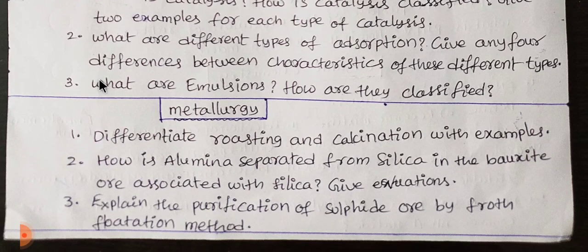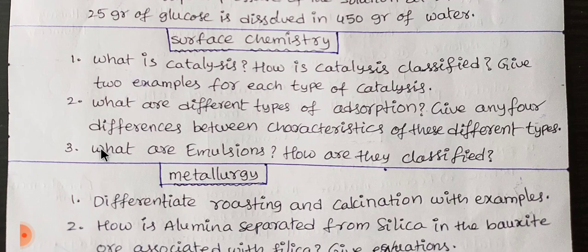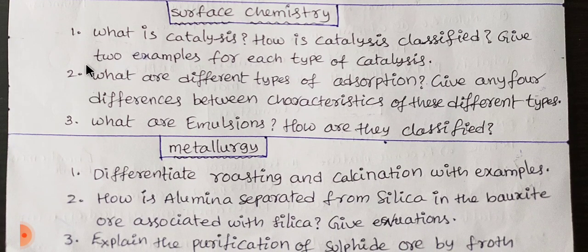Next lesson is metallurgy. Metallurgy will be covered in three questions. First: roasting and calcination. Second: aluminium separated from silica in bauxite. Third: explain the purification of sulphide ore by froth flotation method. The first one and third one are most important. In these three chapters there are maximum two questions — you can check the number in previous papers.